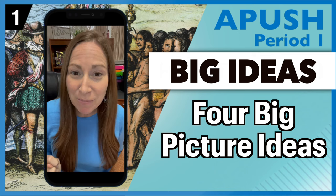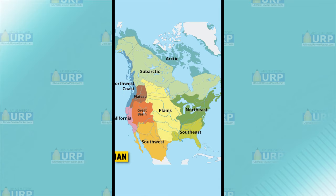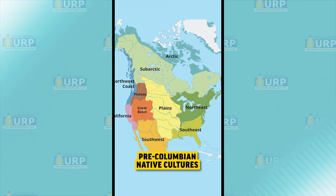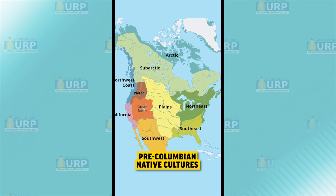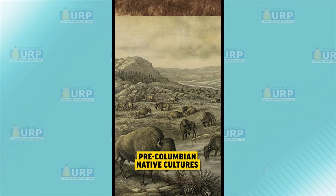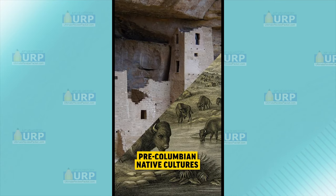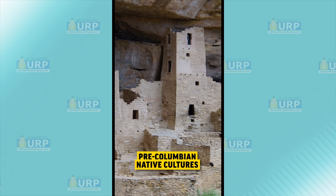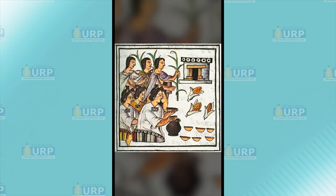Four Big Picture Ideas You Need for APUSH Period 1. First, Natives living in North America developed unique societies by adapting to their environment. Tribes on the Great Plains were semi-nomadic and relied on the buffalo, while the Pueblos in the Southwest lived in cliff dwellings and created irrigation systems.